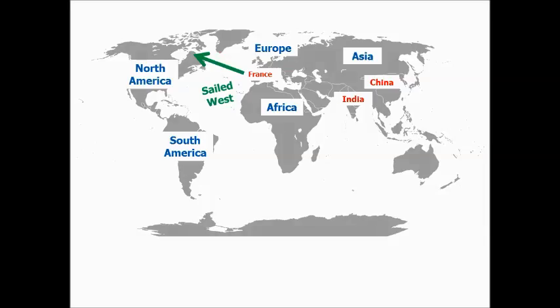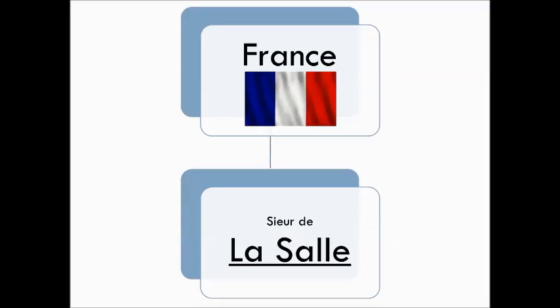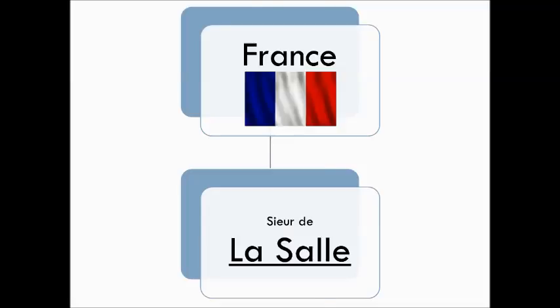France decides to go farther north, and they're also looking for the all-water route to India and China. We're going to look at one explorer — his name is LaSalle, full name Sieur de LaSalle. LaSalle sails from France, comes into the Americas, sails through the Great Lakes, down the Mississippi River, and into the Gulf of Mexico.